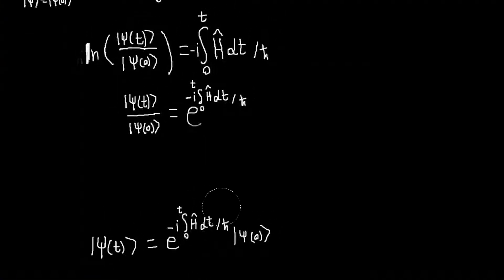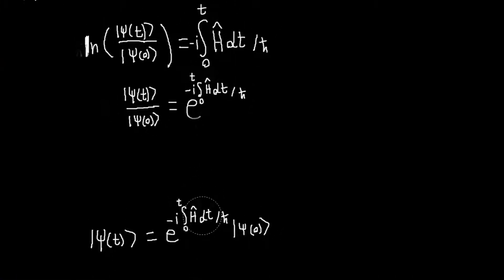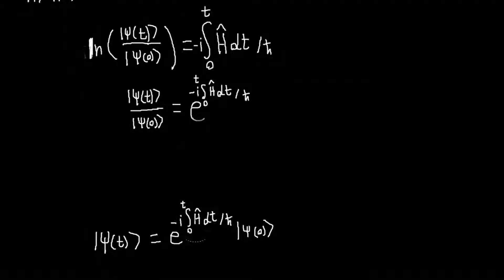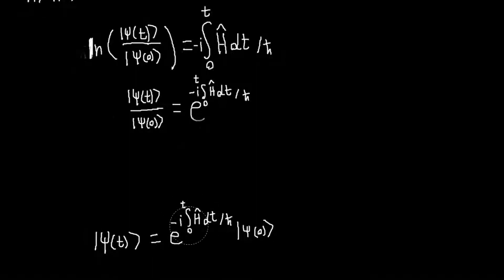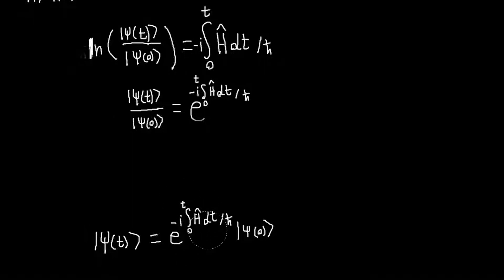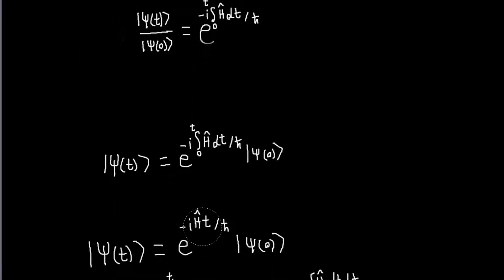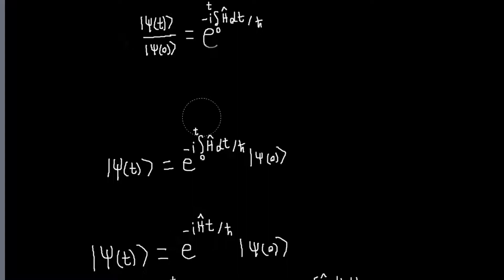And you can notice that if the Hamiltonian is time independent, then I can pull it out of this integral, and I'll just have the integral from 0 to t of dt, which is just t. So in that case, my operator simplifies a little bit.